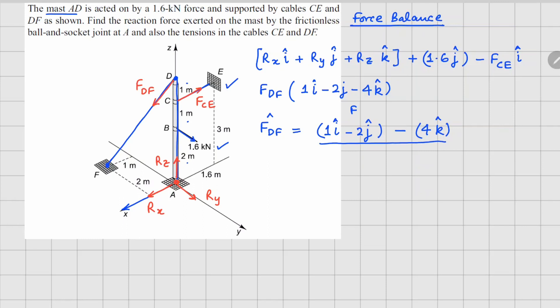Since this vector has magnitude greater than 1, we convert it to a unit vector by computing the square root of (1² + 2² + 4²), which equals the square root of 21.